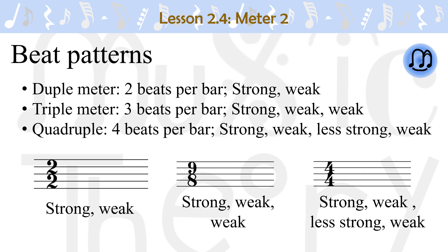The most complicated one is quadruple, which has 4 beats per bar with a strong beat first, then a weak beat, and then a beat that is strong but not as strong as the first beat, and finally a weak beat.